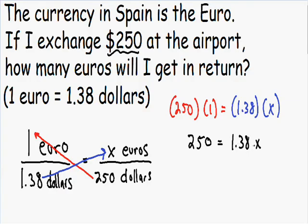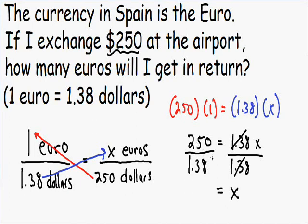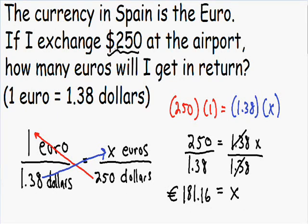Since 1.38 is being multiplied by x, we divide both sides by 1.38. On the right, the 1.38 cancels, leaving just x. On the left, we have 250 divided by 1.38. Typing that into the calculator, we get 181.16. When dealing with money or currency, always round to two decimal places. Since x represented euros in our ratio, our answer is 181.16 euros. So $250 is equal to 181 euros and 16 euro cents.